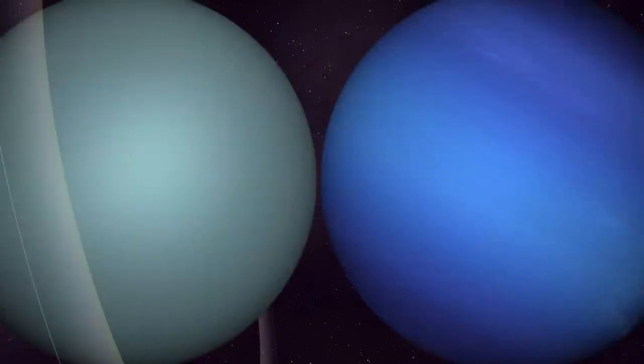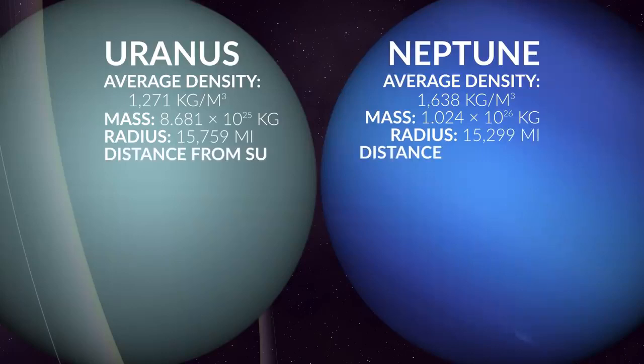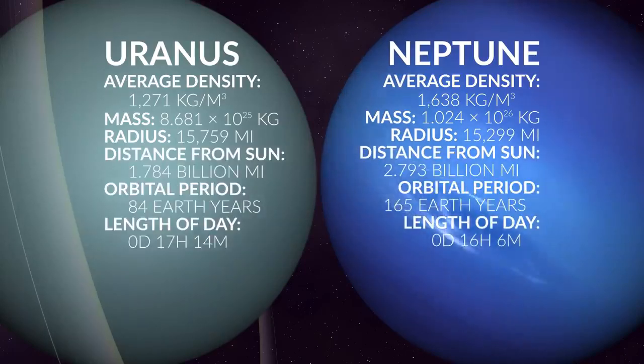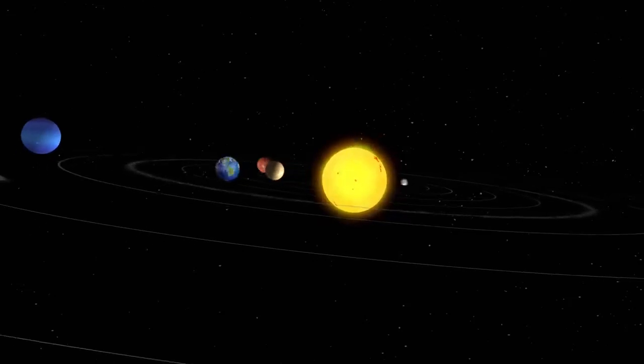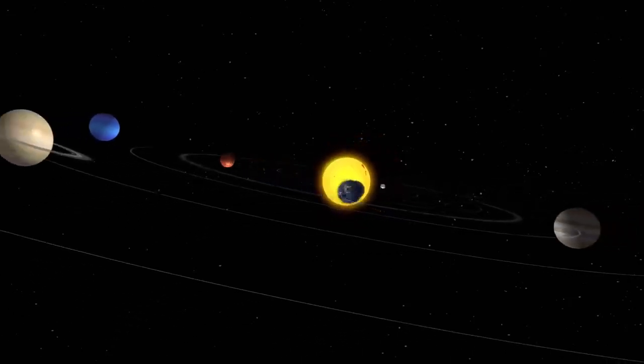While they have similar atmospheric compositions, there is a difference in their overall density. Uranus is slightly larger in diameter, but Neptune is slightly more massive. Each planet presents some unique characteristics as we consider their roles in our solar system.